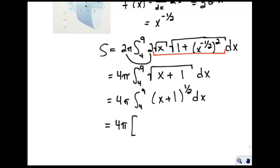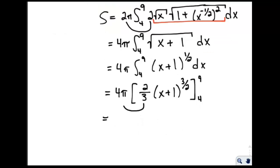So we're going to integrate. We get 4 pi, still on the outside, times x plus 1 to the 3 halves, because we add 1 to our exponent, and then multiply by the reciprocal of the exponent, which is 2 thirds. That's going to be evaluated from 4 to 9. I'm going to bring the 2 thirds out to the front, so I'll end up with 8 pi over 3 in front. Then I have to evaluate x plus 1 to the 3 halves from 4 to 9.